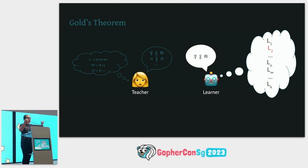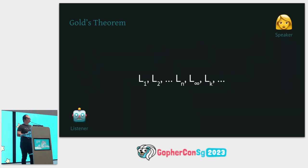But recently I understood why it was set up like this after a most interesting experience observing a family and a child's language acquisition process. Come find me after the talk if you want to hear the story. For now, let's play through this scenario. The listener listens to the speaker and considers a list of hypotheses — which language could it be? To make it more concrete, let's list this list of hypotheses.